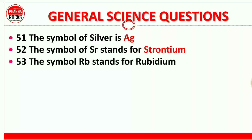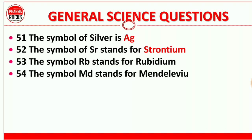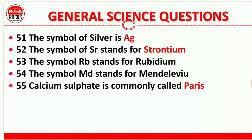Question 53: The symbol RB stands for rubidium — RB means rubidium. Question 54: The symbol MD stands for Mendelevium — MD means Mendelevium.